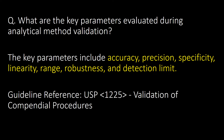What are the key parameters evaluated during analytical method validation? The key parameters include accuracy, precision, specificity, linearity, range, robustness, and detection limit. Guideline reference: USP Chapter 1225.